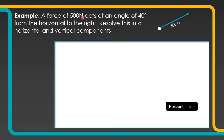Here's an example: you've got a force of 500 newtons to the right acting at an angle of 40 degrees from the horizontal. There's a little picture to help you work out what it should look like. You need to turn this single resultant force into a horizontal component and a vertical component.